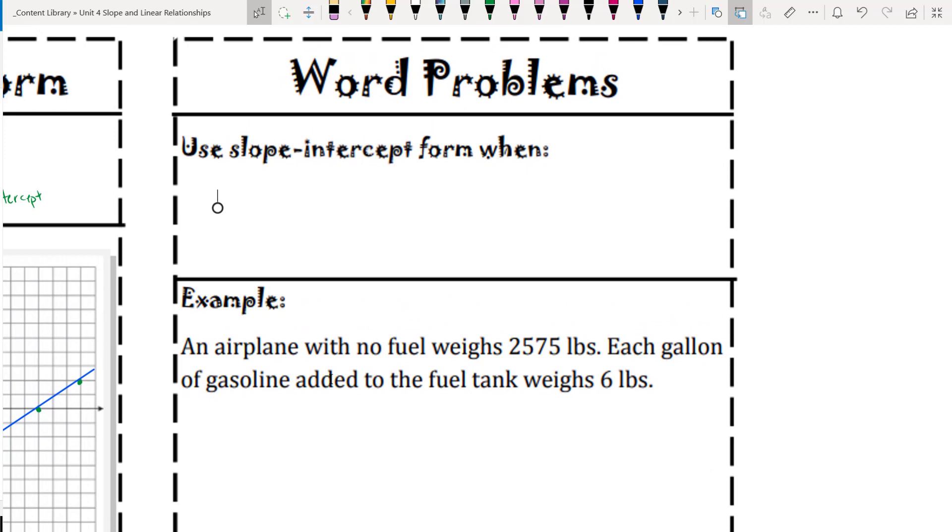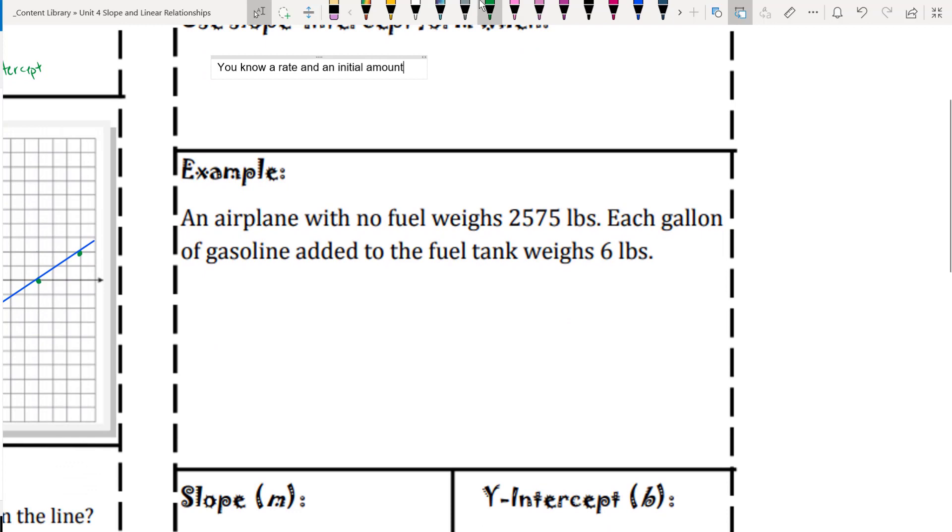Here, you're going to use slope-intercept form when you know the rate. An airplane with no fuel weighs 2,575 pounds. Each gallon of gasoline added to the fuel tank weighs 6 pounds. So if x is the number of gallons of gas, y is equal to the total weight of the plane. Is 2,575 the slope or is that your rate or is that your y-intercept?